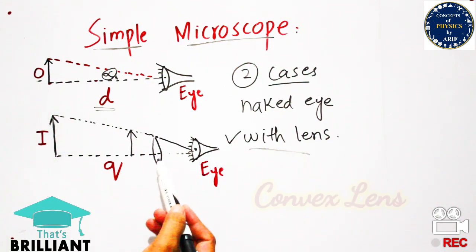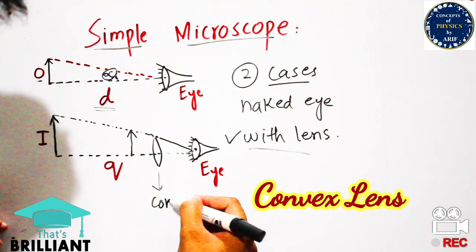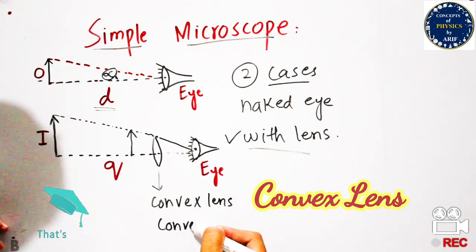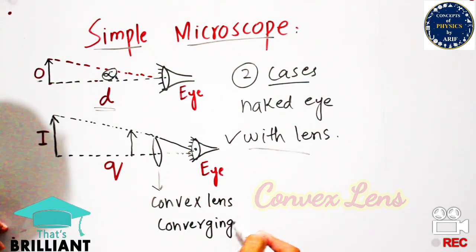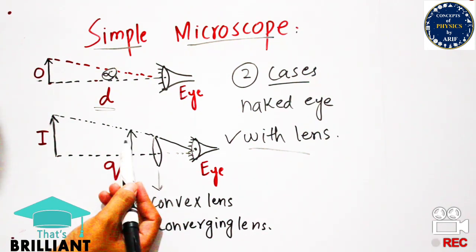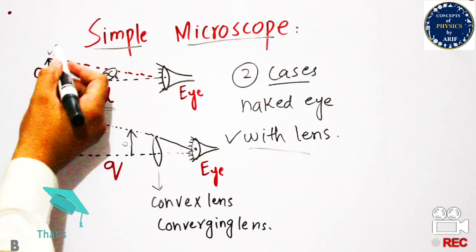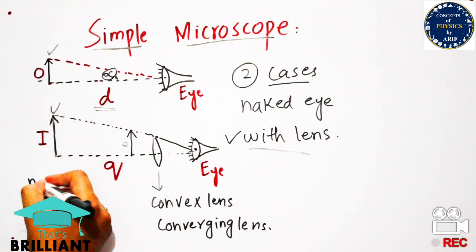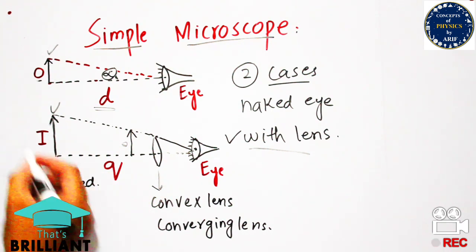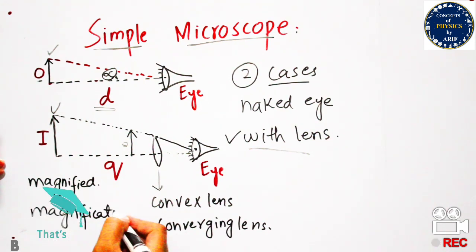In the other case, when an object is placed near a convex lens — also known as a converging lens because it converges all rays coming towards it — a magnified image is produced. The distance between the eye and the image is Q, and the angle produced at the eye in front of the lens is known as beta. So after placing the lens, the image is magnified and we need to calculate the magnification.